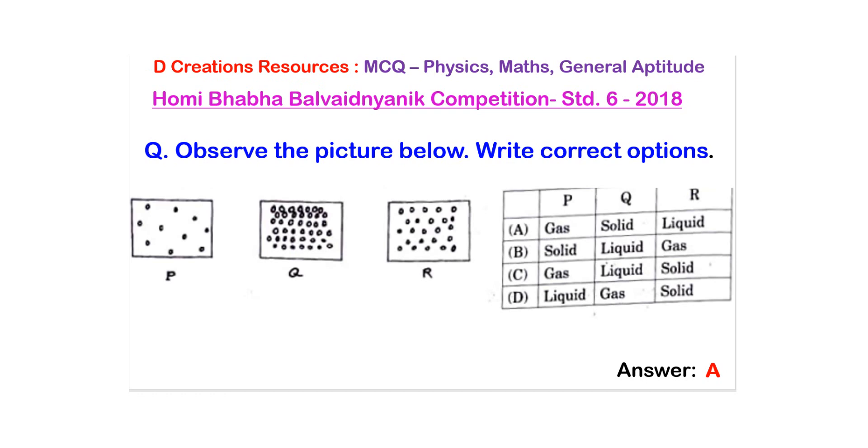Now there is some difference again in both. So you look at Q, you see that Q has the maximum density of molecules. There are maximum number of molecules. So obviously it will have to be the solid state.